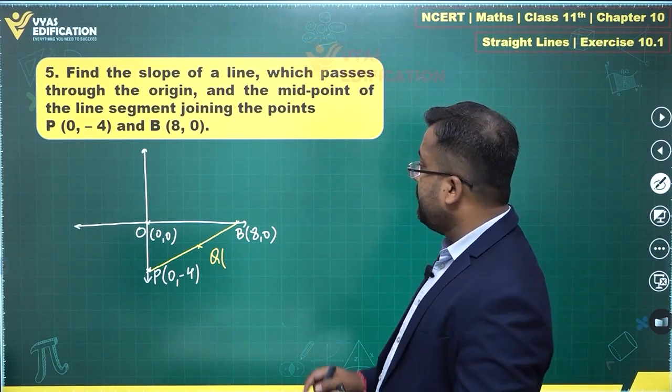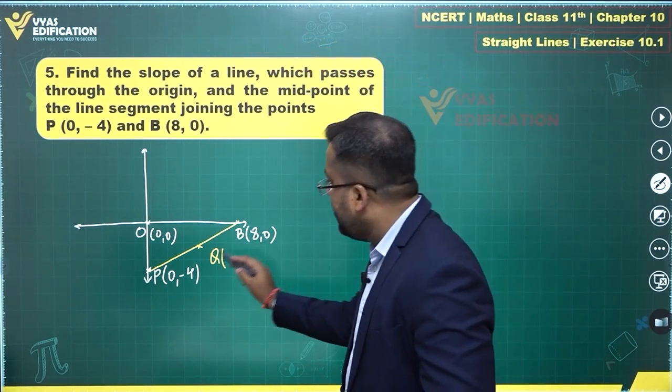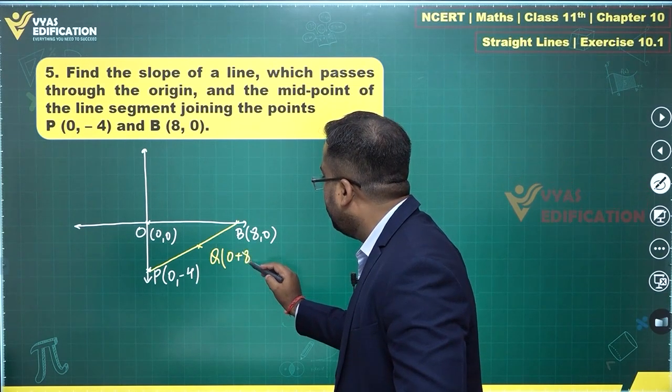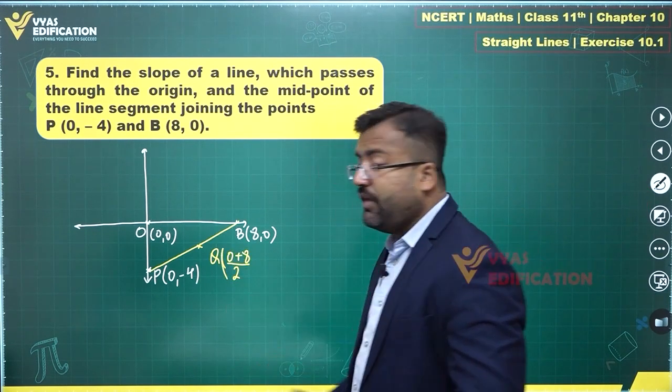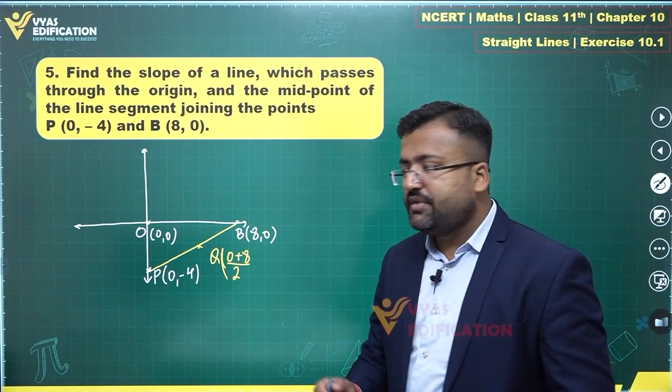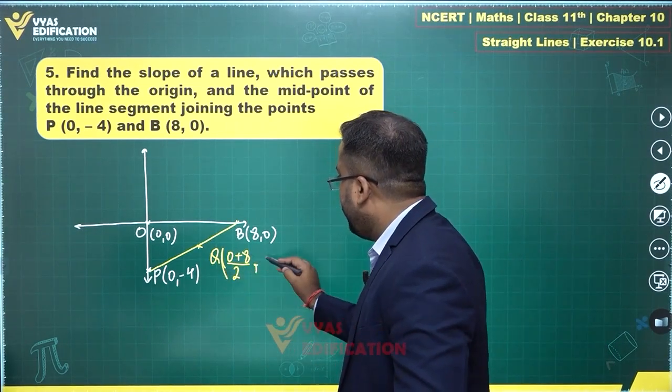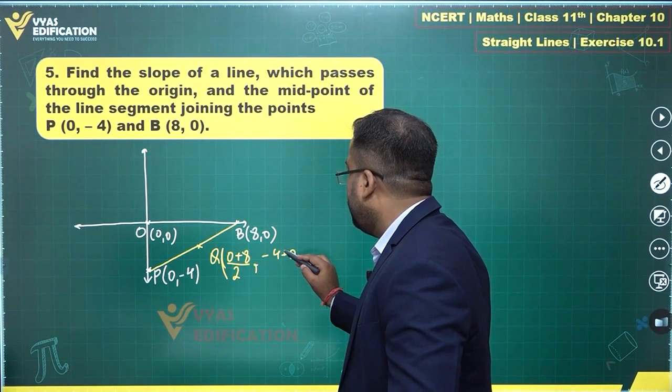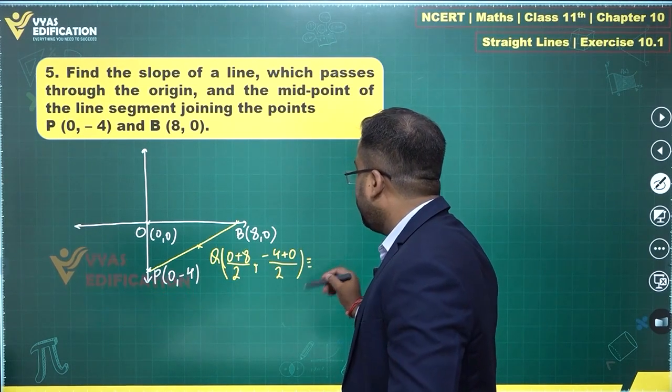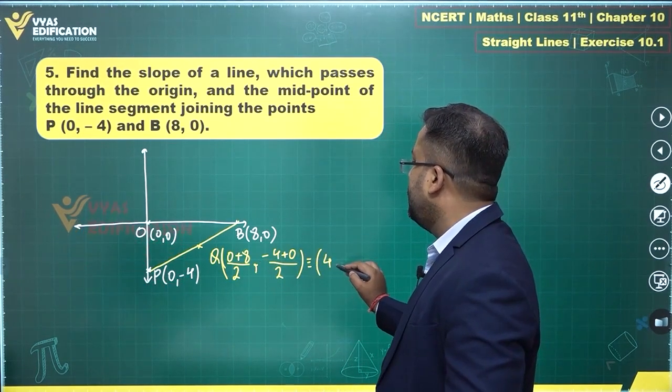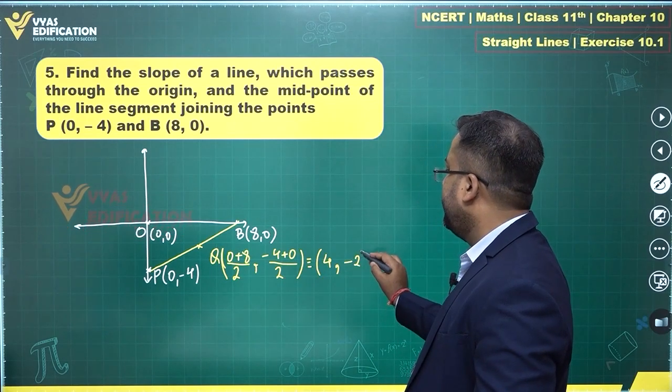The coordinates of Q can be found very easily. That will be X1 plus X2, zero plus eight by two. Midpoint is X1 plus X2 by two, Y1 plus Y2 by two, minus four plus zero by two. This is eight by two which is four comma minus four by two which is minus two.